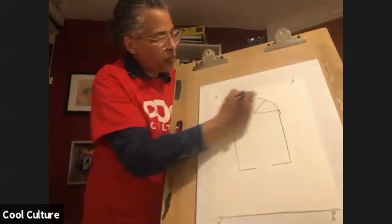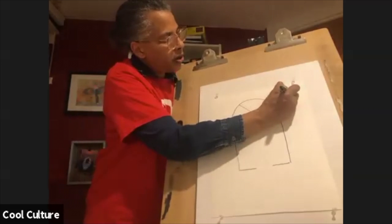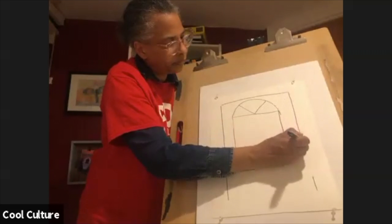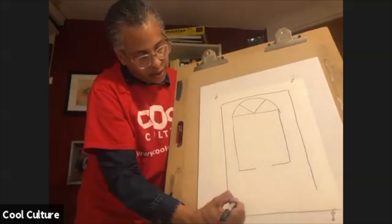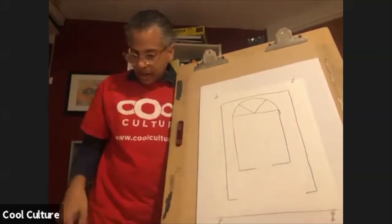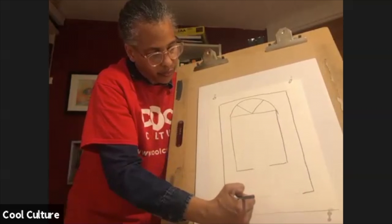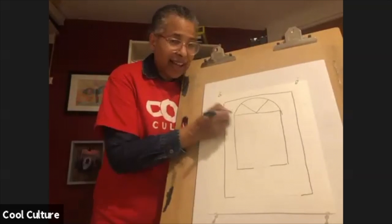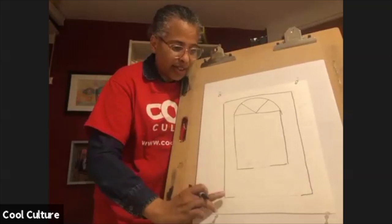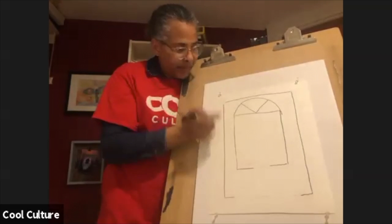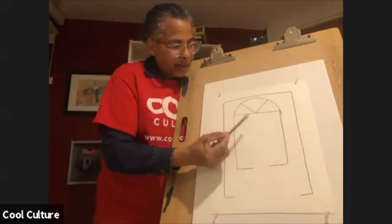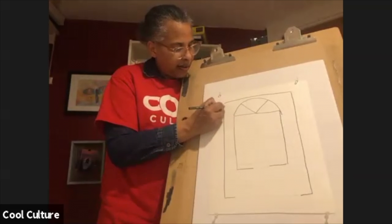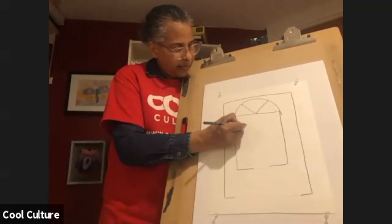Now we're ready to draw the wall of our room. You're going to make another rectangle around your window. Remember, you have your point there and you're going to use that point as a guide to figure out your diagonal to separate the floor from the wall and the ceiling. So here is my dot, and I am going to lightly — you can use a ruler if you want — find that diagonal.